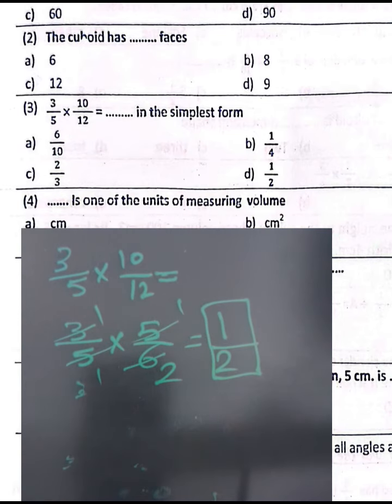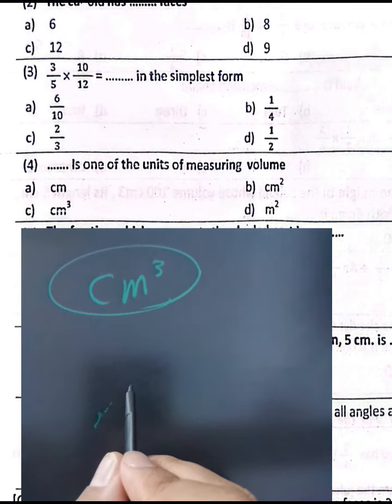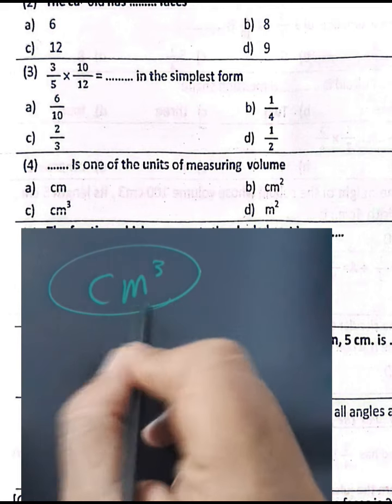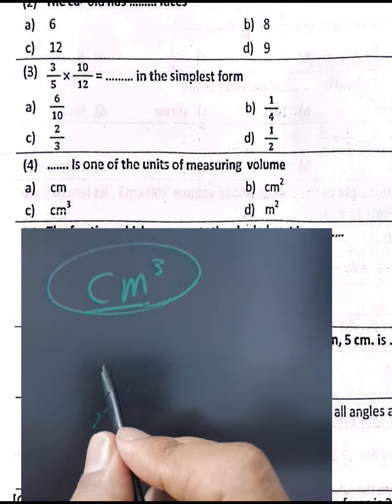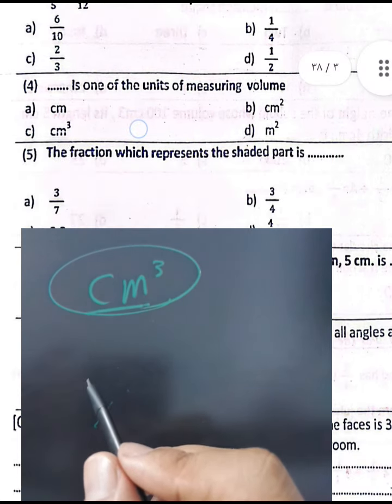Question number four: the unit for measuring volume — the power here will be power 3, giving cubic centimeters. Volume uses cubic units, because the volume of a cube equals side times side times side. For example, one centimeter times itself three times equals one centimeter cubed, meaning cubic centimeter.